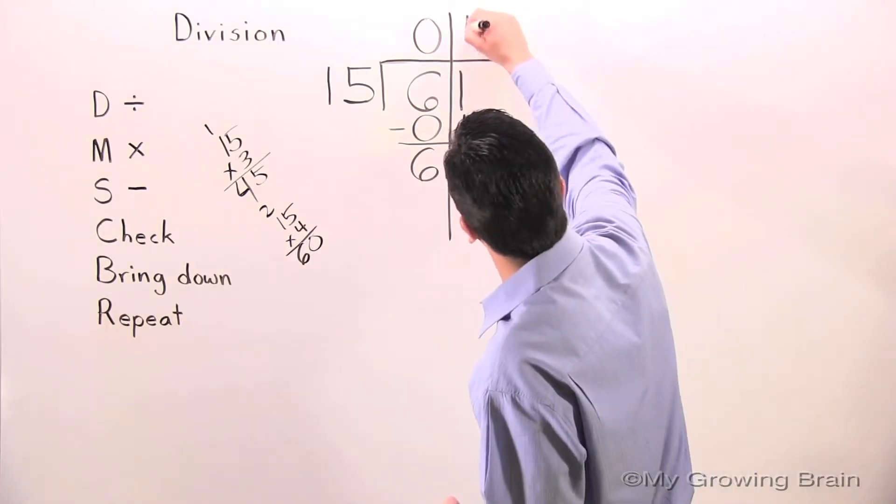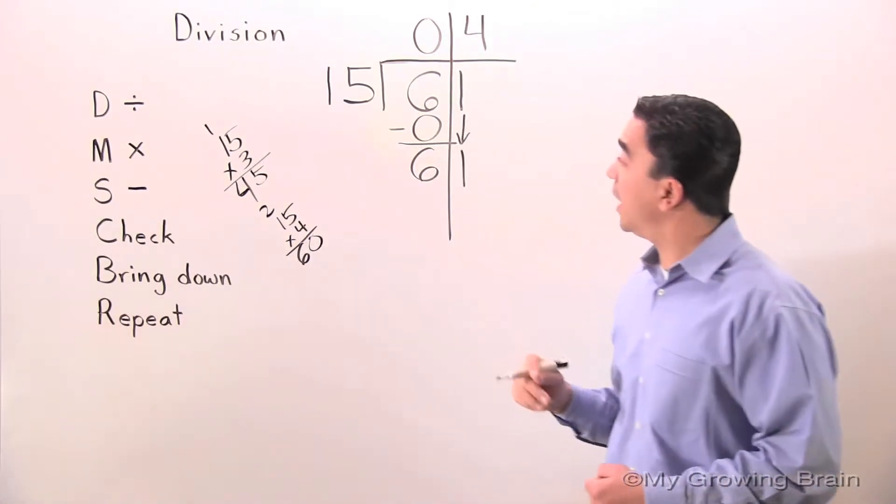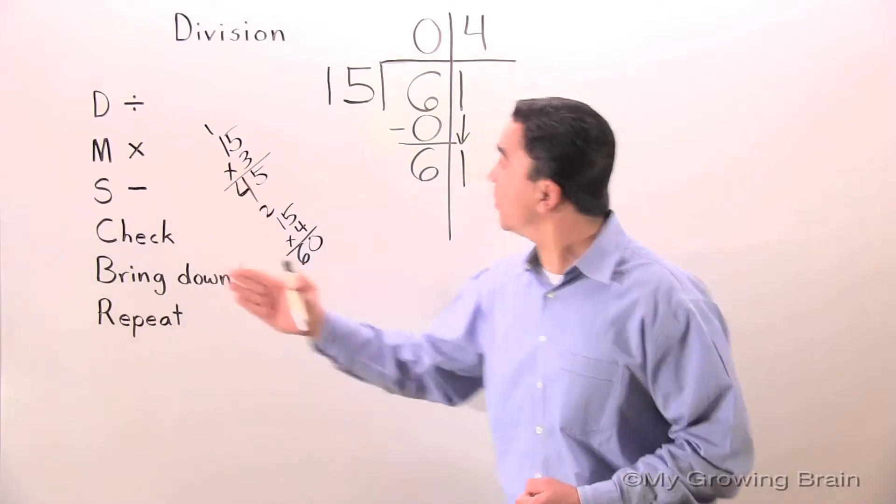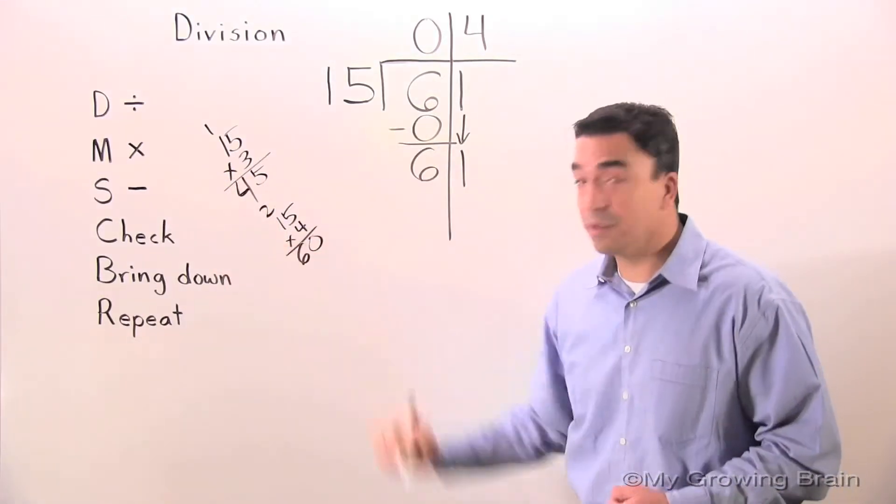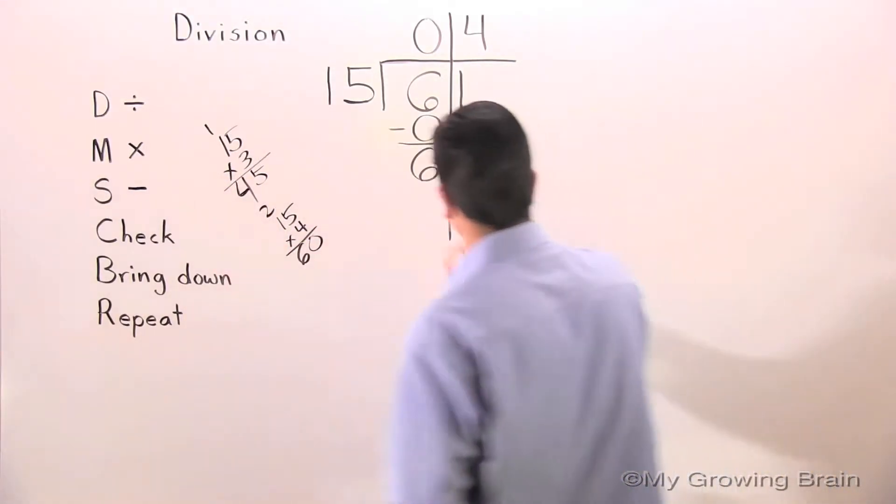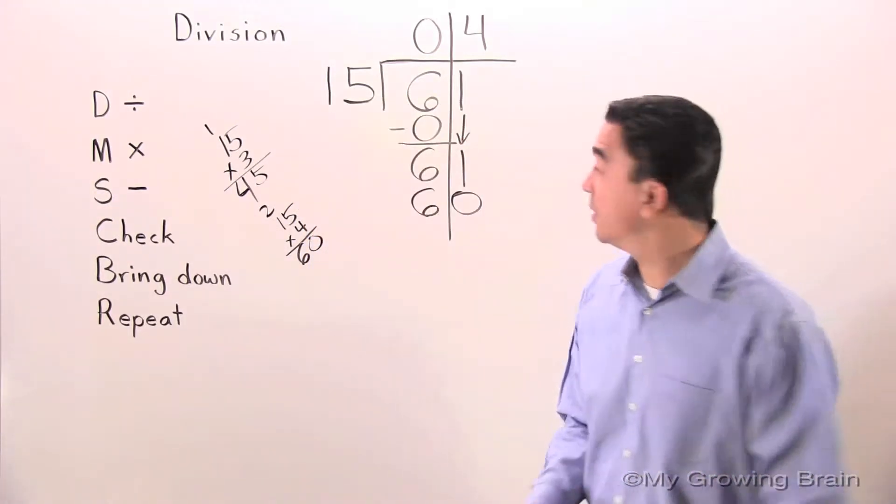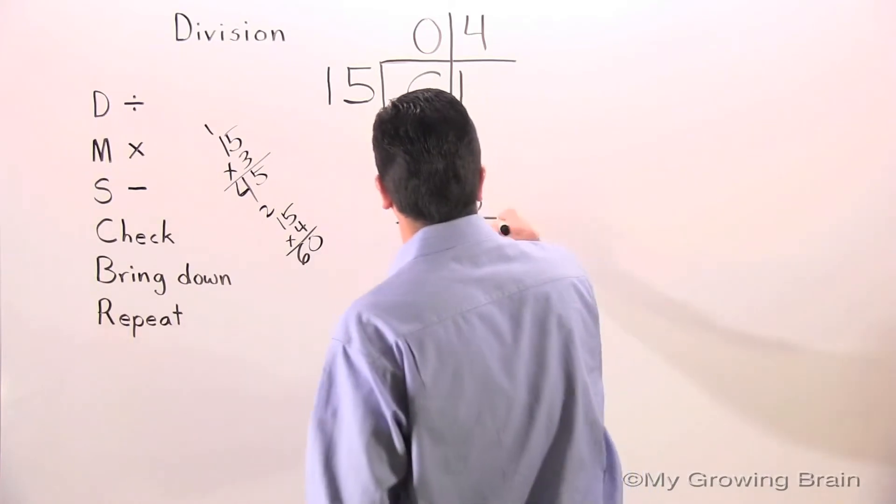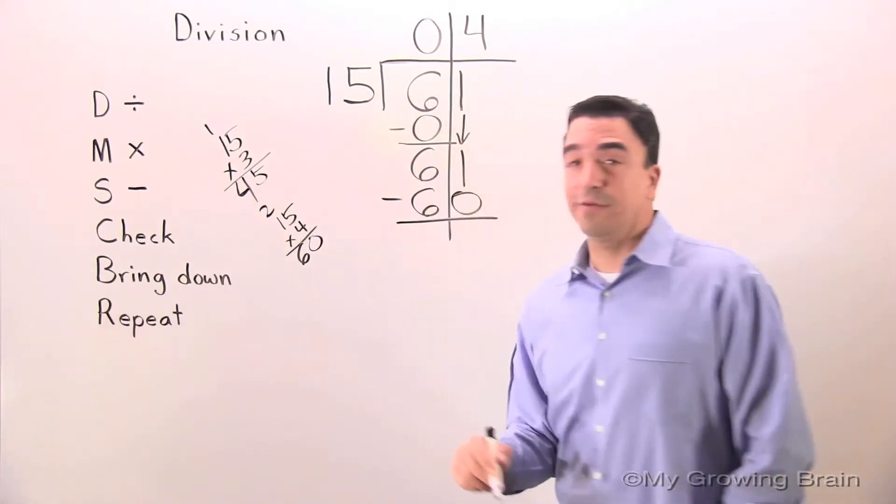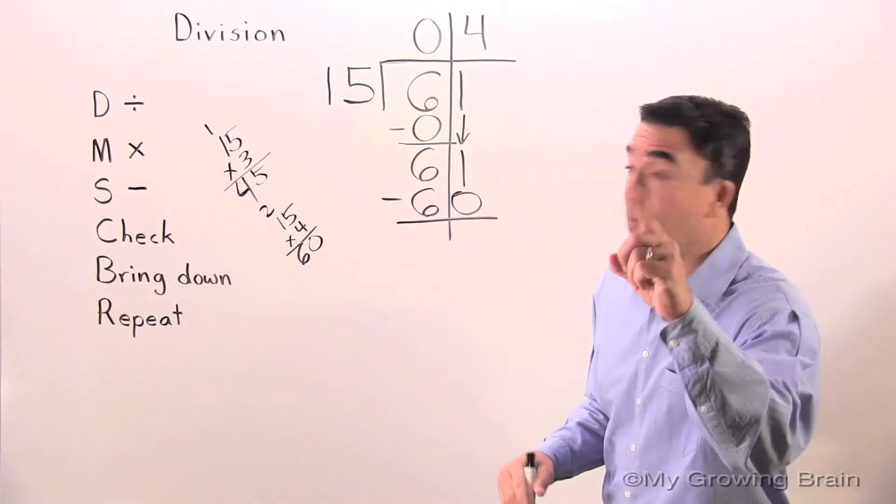So the next step is multiply: 15 times 4 equals 60. Next step, subtract: 61 minus 60 equals 1.